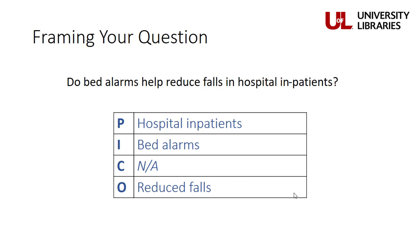We have no comparison in this question. By simply breaking our PICO question down into this chart, we have identified our three major search terms, with one minor edit — you wouldn't search for the term 'reduced.' You would just want to search for 'falls,' because the outcome is only an assumption at this point. We could conceivably find that bed alarms increase or have no effect on falls in our patients, so we wouldn't want to bias our results by only searching for 'reduced falls.'